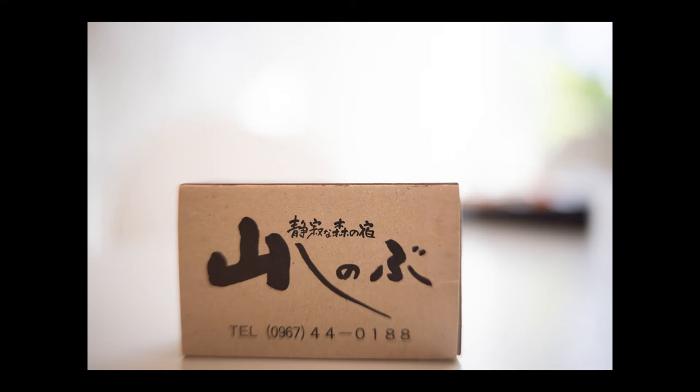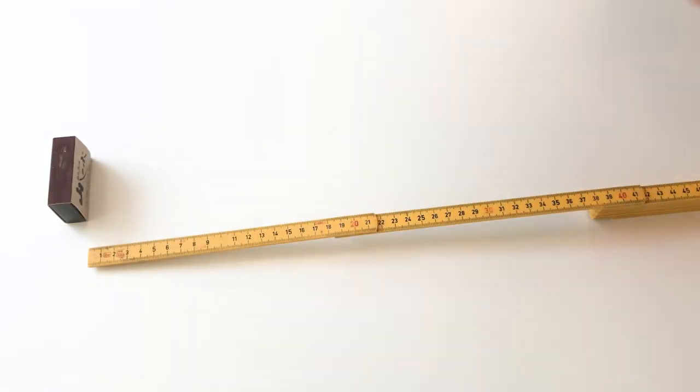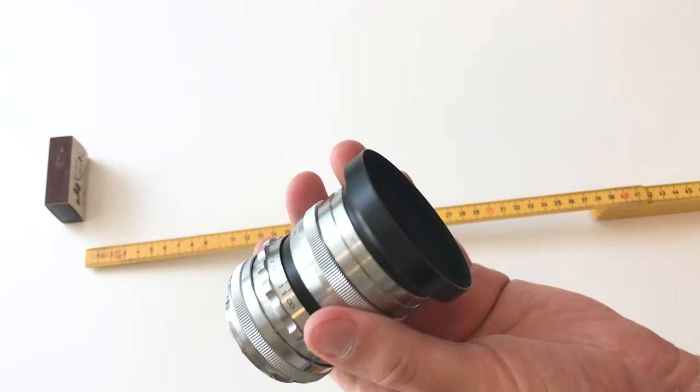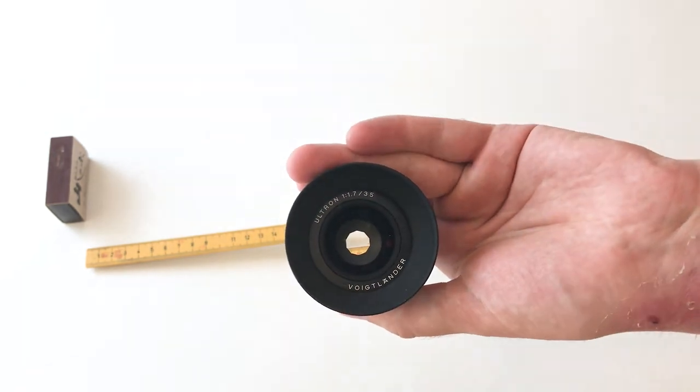I should also mention that the adapter comes in black, which would fit this lens a lot better than the silver version that I bought. So let's try another lens. Let's try the 35 millimeter Voigtlander f1.7 Ultron.